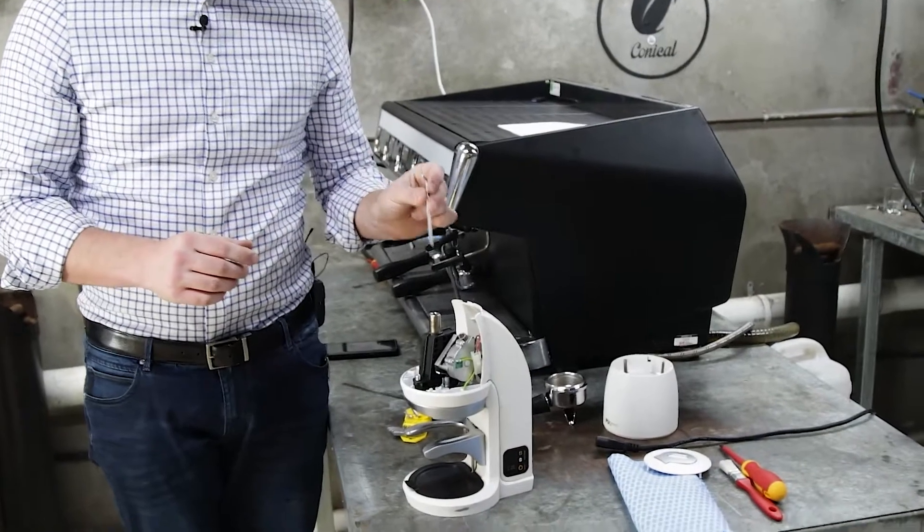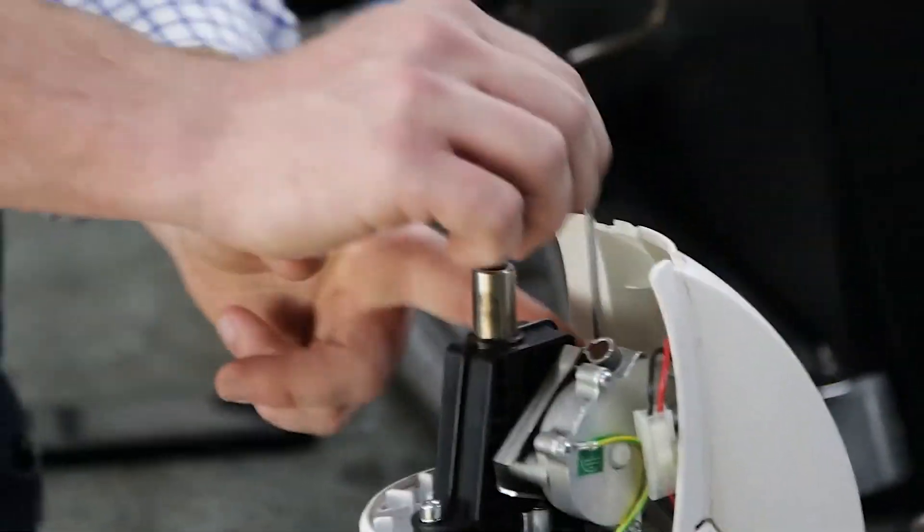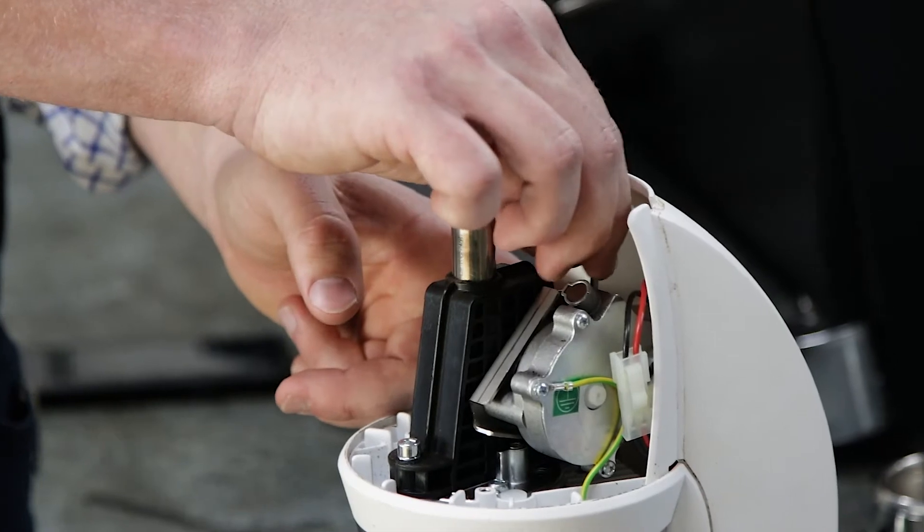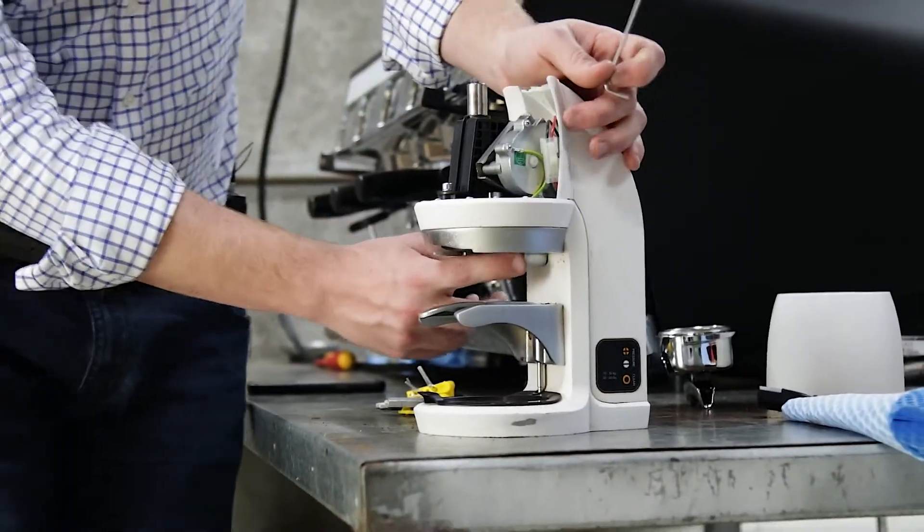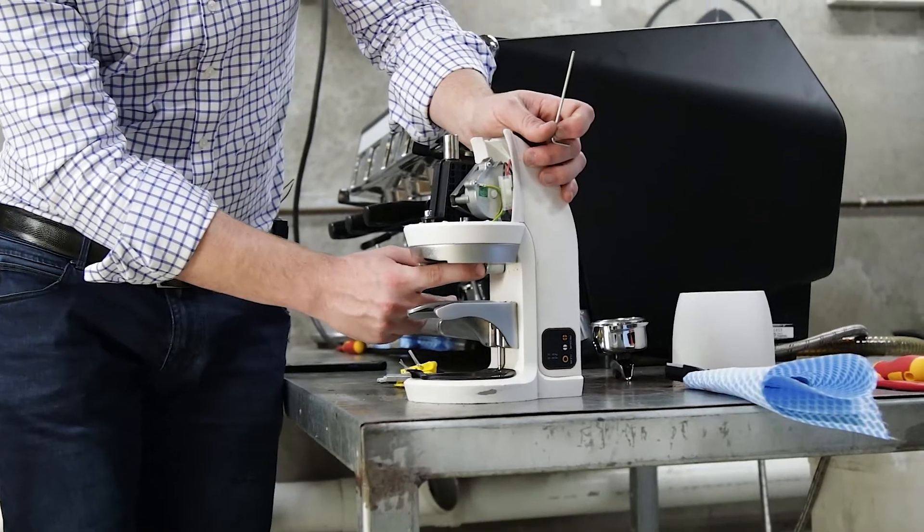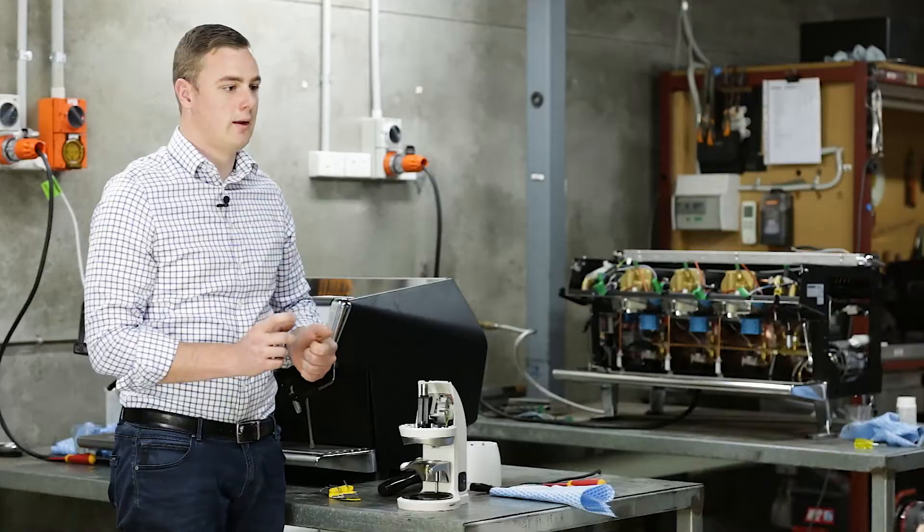And now I just want to go back into that same Allen key, that same hole at the back here, and tighten it up. And now it's tightened. If I put my finger on that sensor, it's not moving back. So I know that it's nice and tight in there.